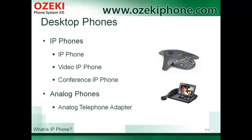Desktop phones can be a physical IP phone or an analog phone. A physical IP phone can be a simple IP phone, a video phone, or a conference phone. Analog phones can also work in an IP-based network where a special device is necessary — the analog telephone adapter. It can convert the different signals between the analog phone and the VoIP network.